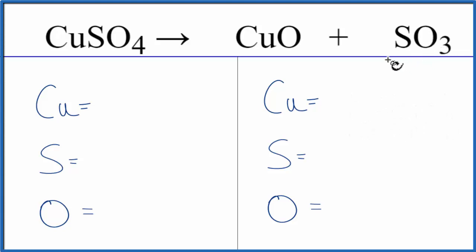So let's add the atoms up on each side and balance the equation. We have one copper, one sulfur, and four oxygens. So that's our CuSO4. On the product side,